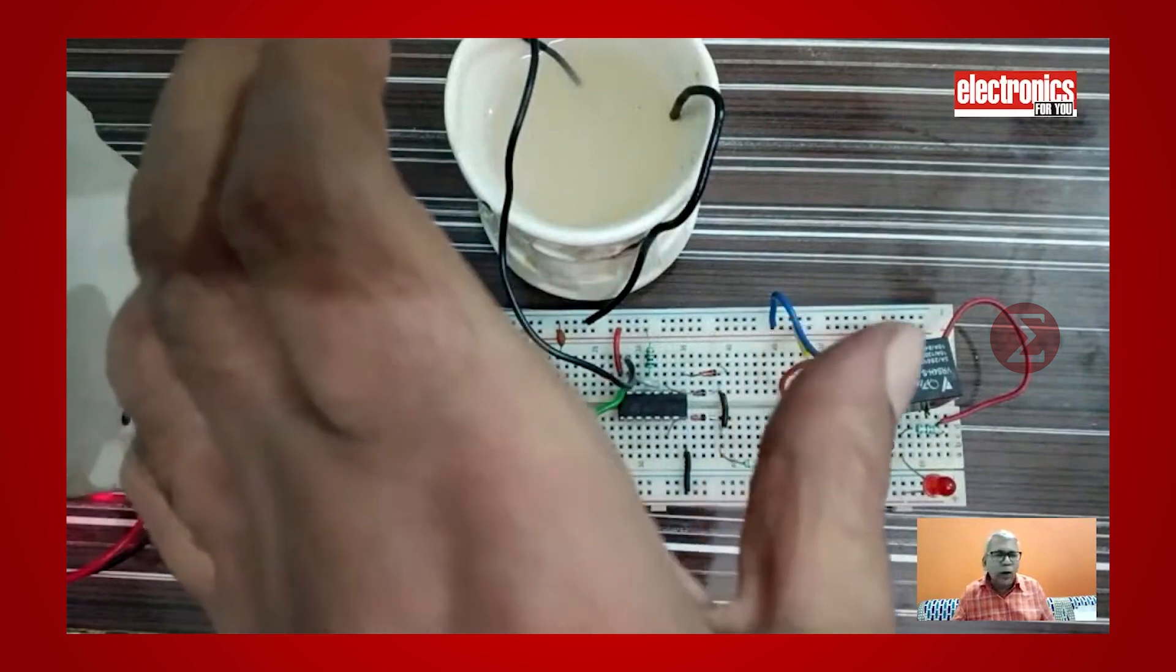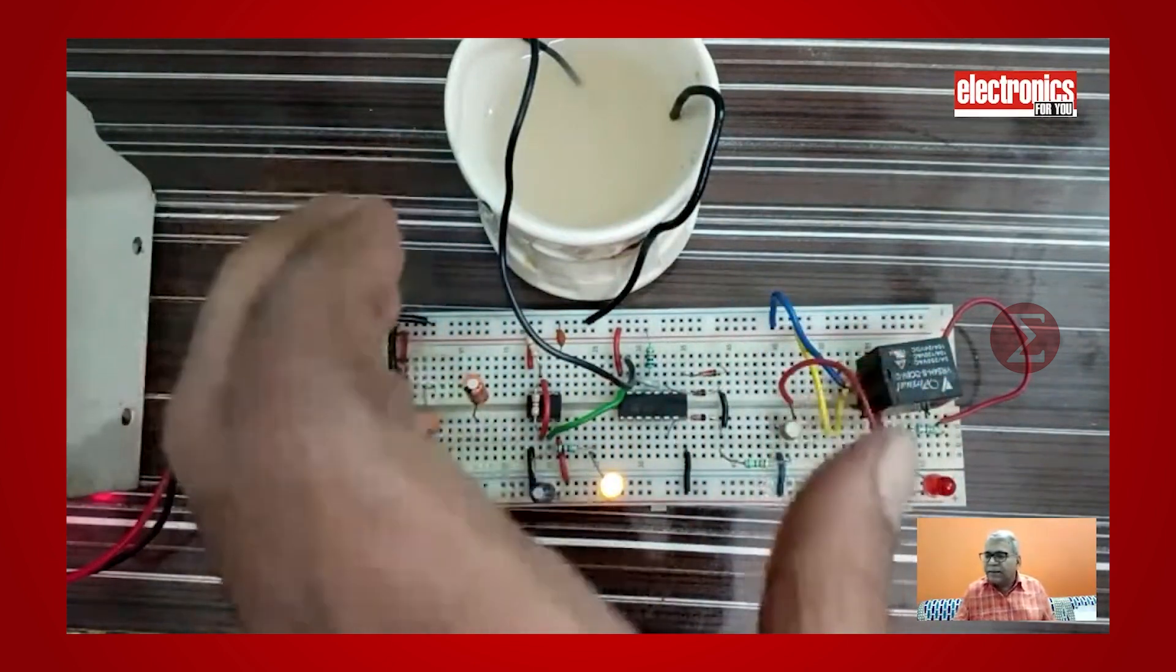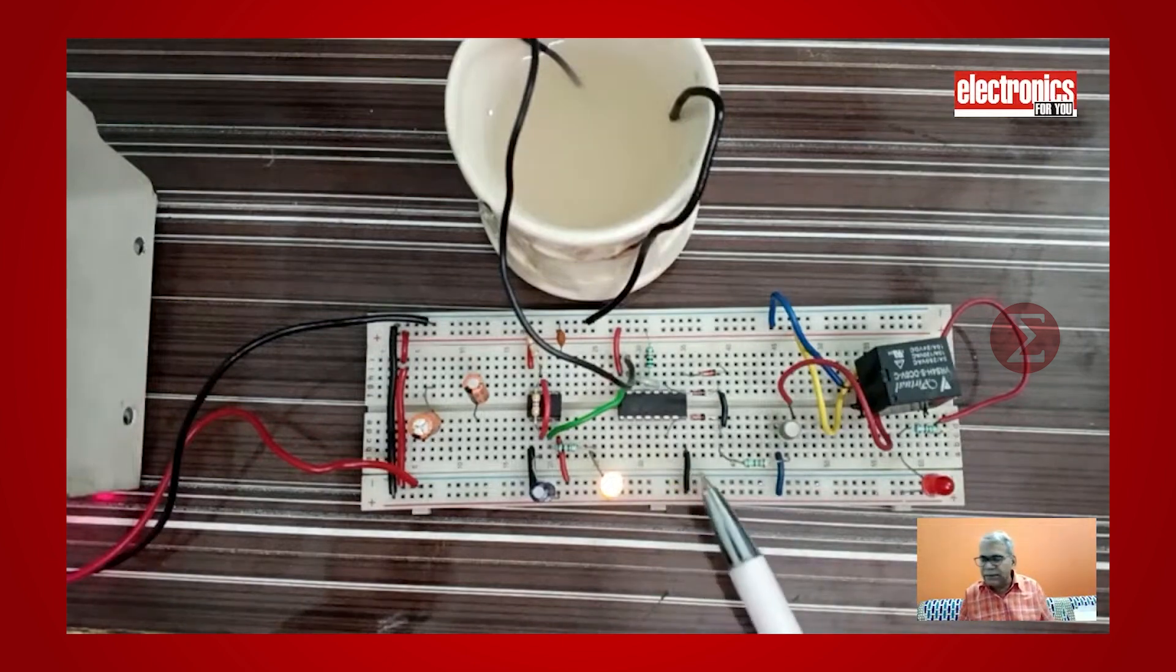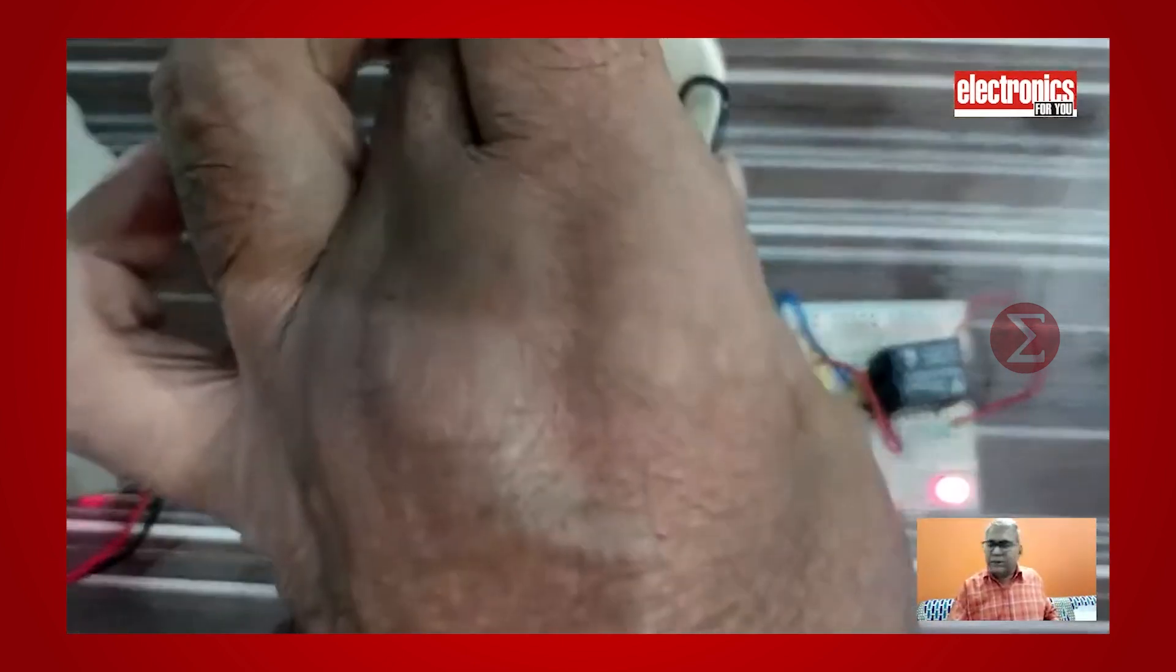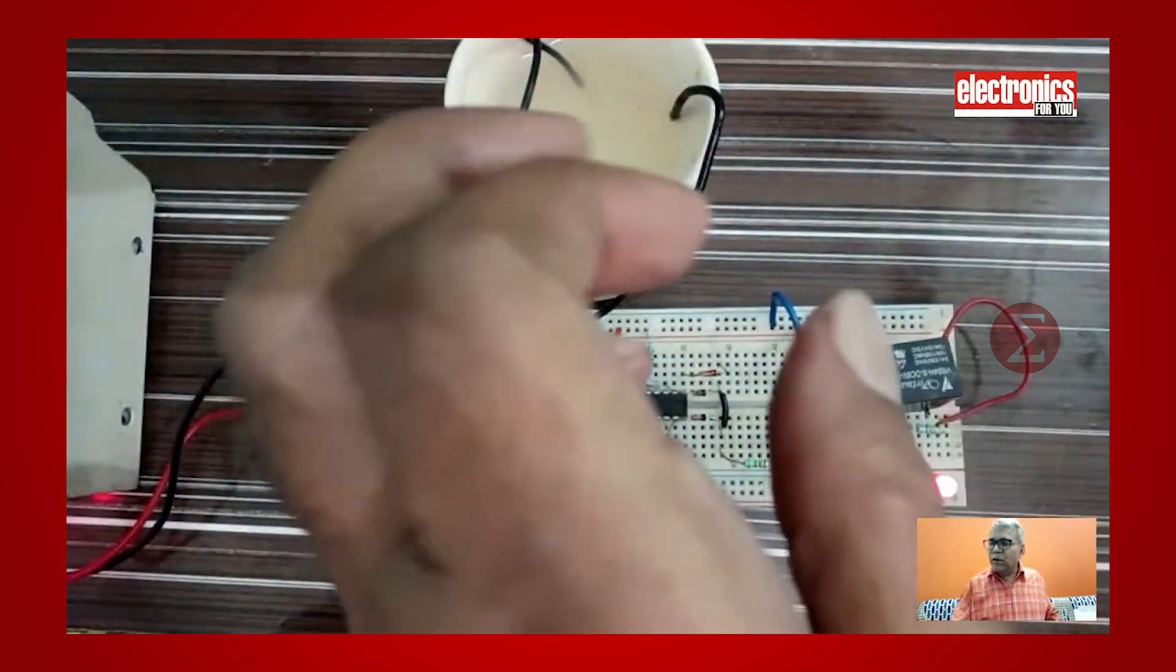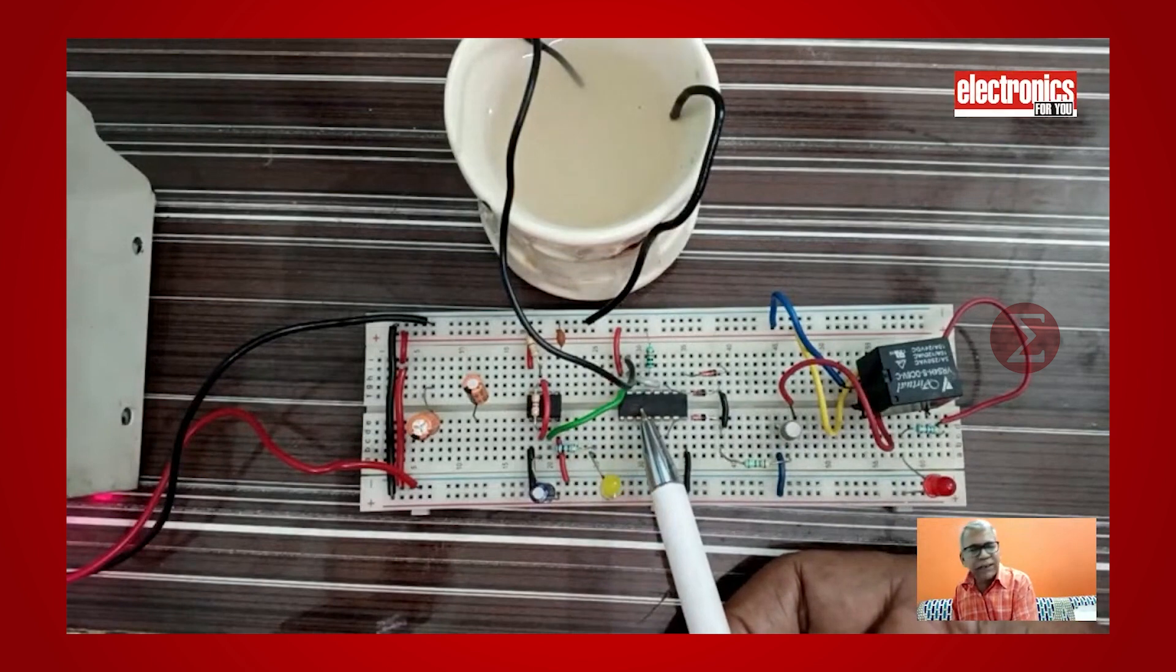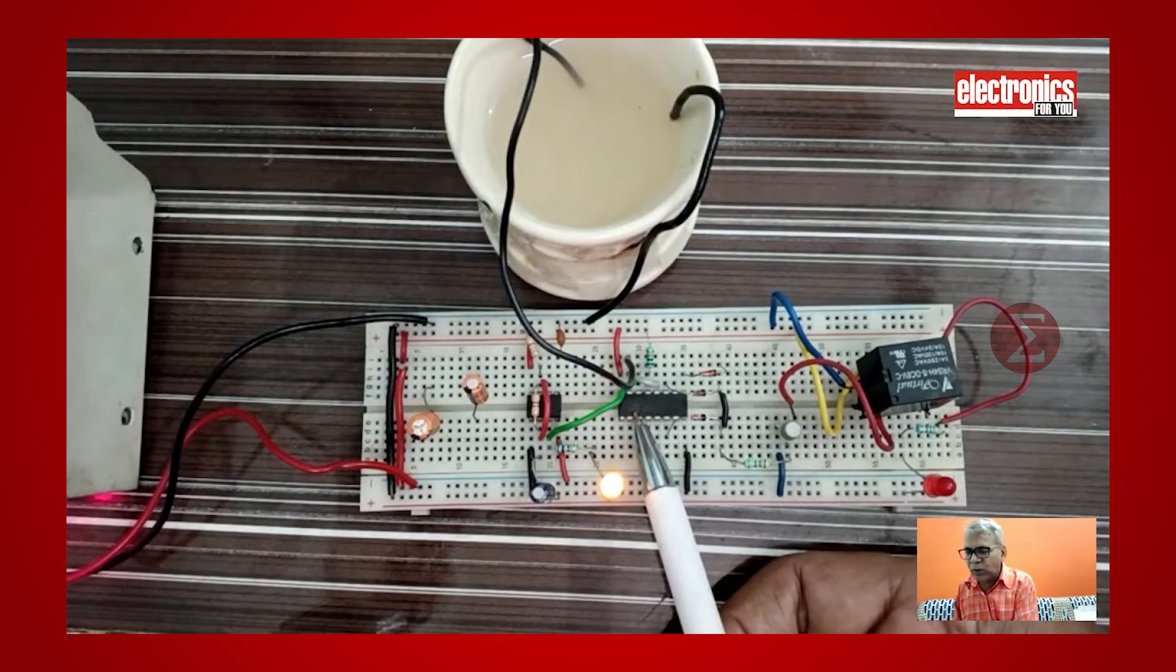When water is there in the tank, the circuit will complete and pin 15 and 13 are grounded and the circuit is enabled. When there is no water, it is an open circuit then pin 13 and 15 both are high. Decade counter will get clock from 555 timer but there will be no increment in clock and circuit will stop and motor will turn off.